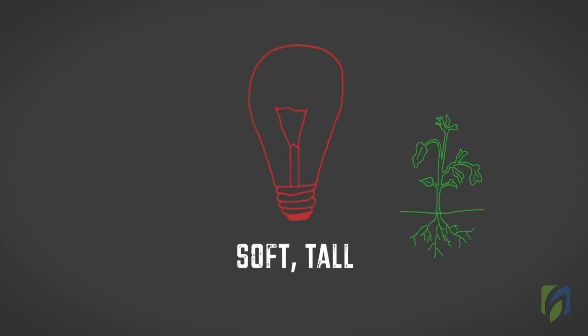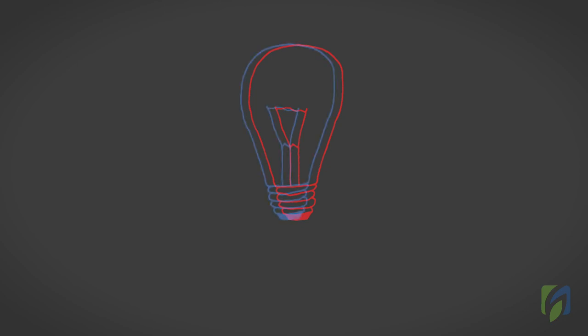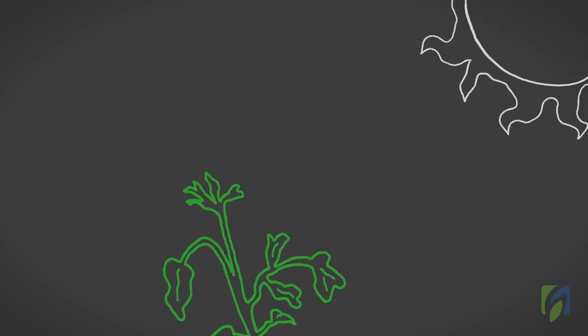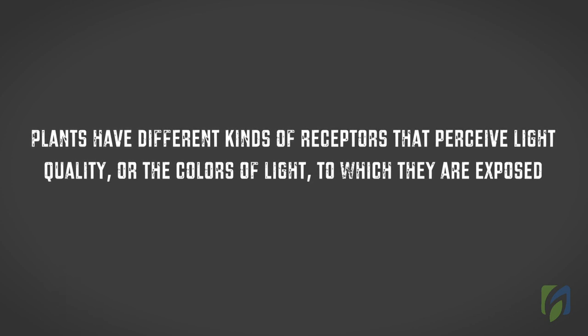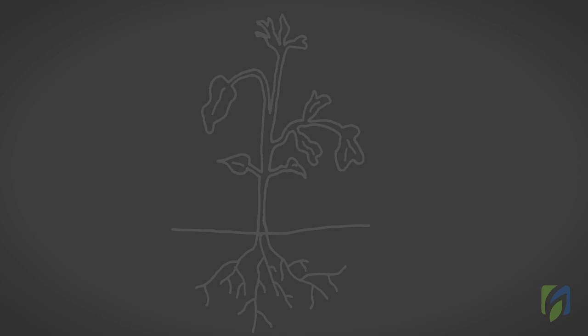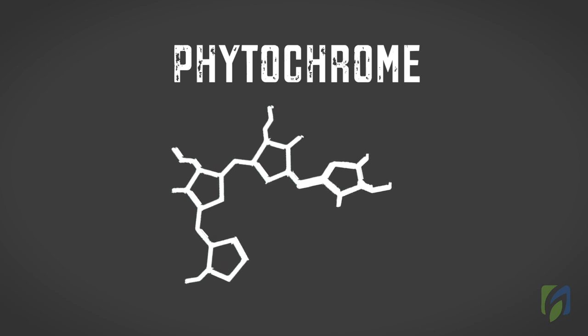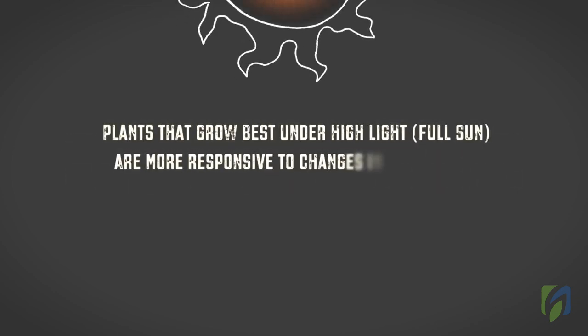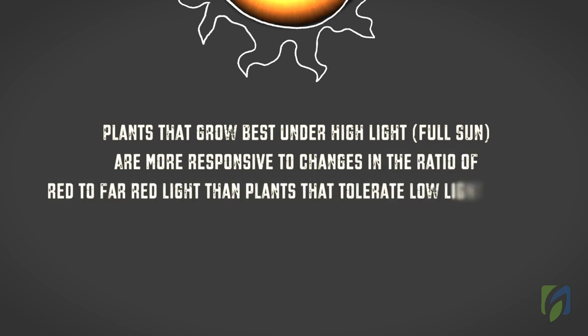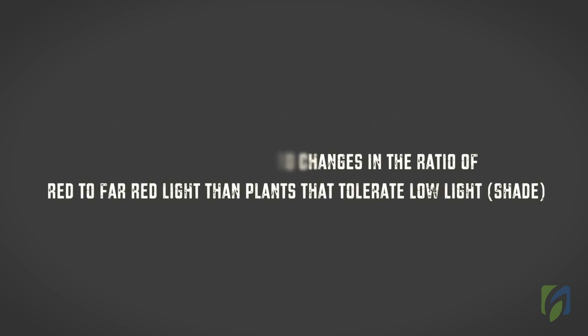When plants are grown in red light, growth is soft and the internodes are long, resulting in tall plants. Red light, when combined with blue light, promotes flowering. Plants adapt their growth to position their stems and leaves to receive more desirable light conditions. Plants have different kinds of receptors that perceive light quality; one of these is phytochrome, which is sensitive to the amount of red light relative to far red light. The ratio of red to far red light also controls flowering in plants sensitive to day length. Plants that grow best under full sun are more responsive to changes in the red to far red ratio than plants that tolerate low light or shade.